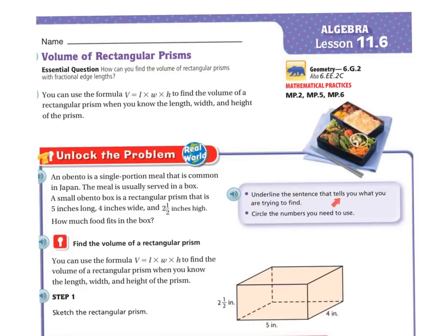First we need to underline the sentence that tells us what we're trying to find. And what we're trying to find is how much food fits in the box. Then it says circle the numbers that you're going to need.